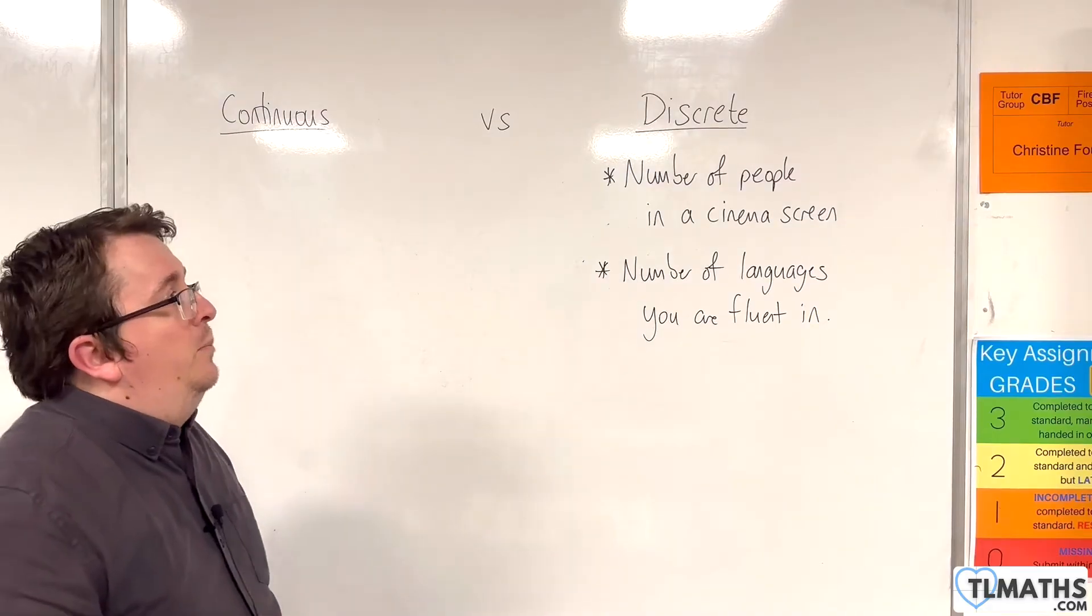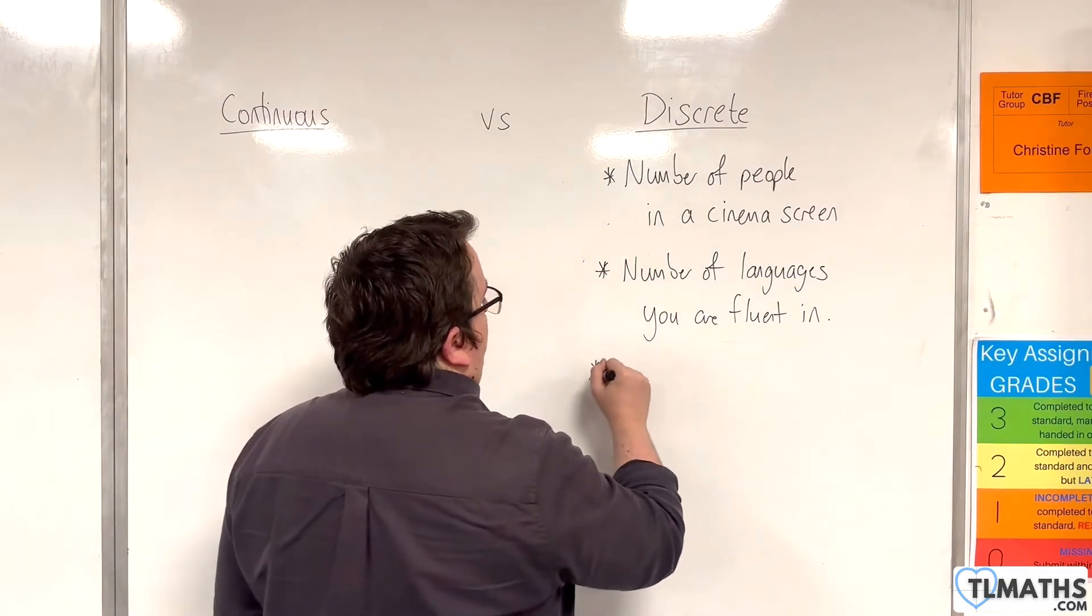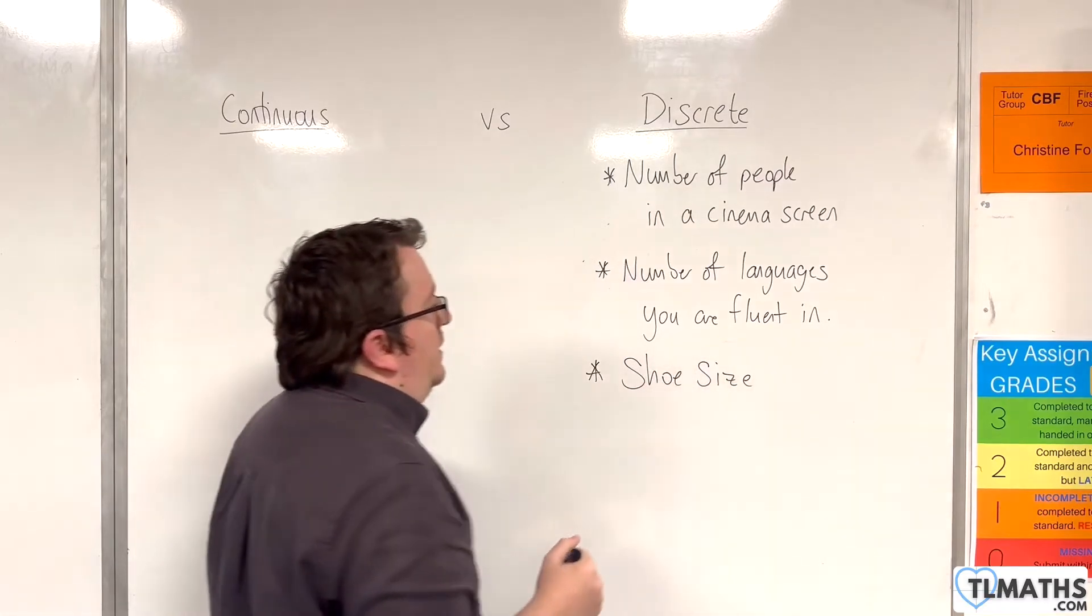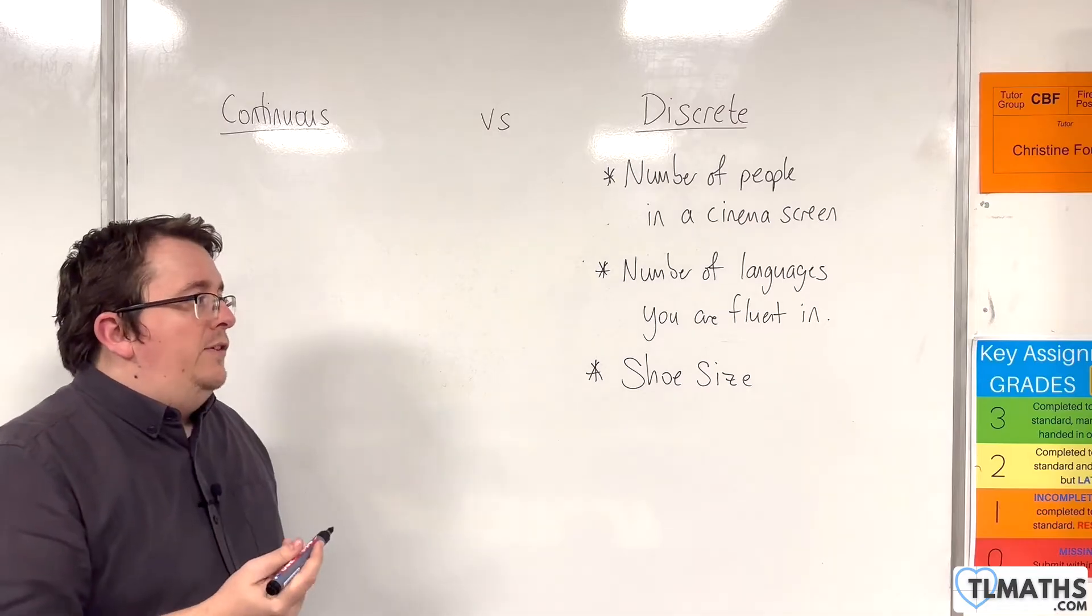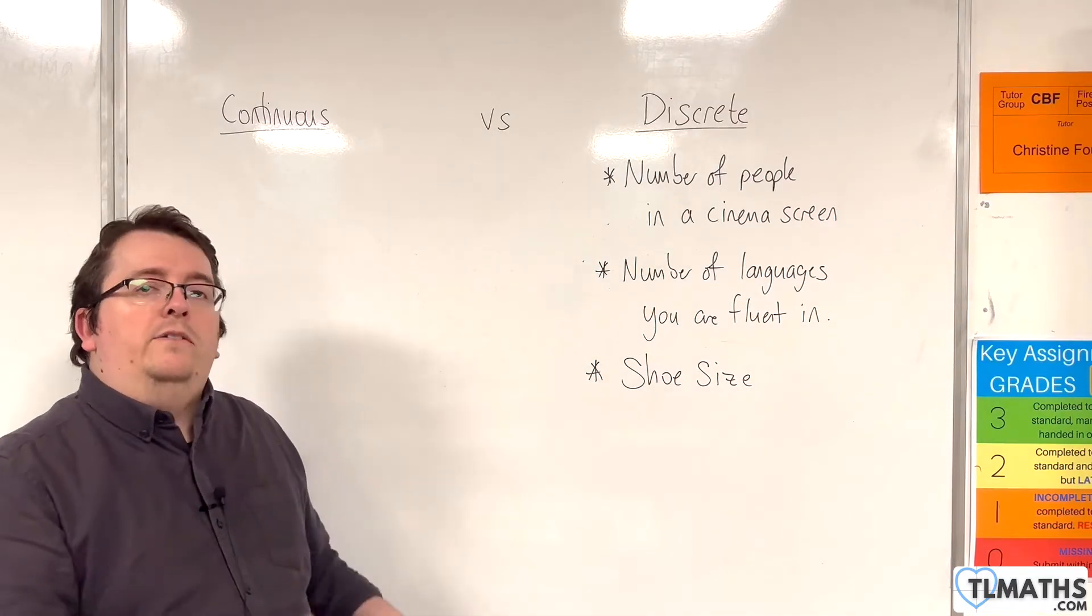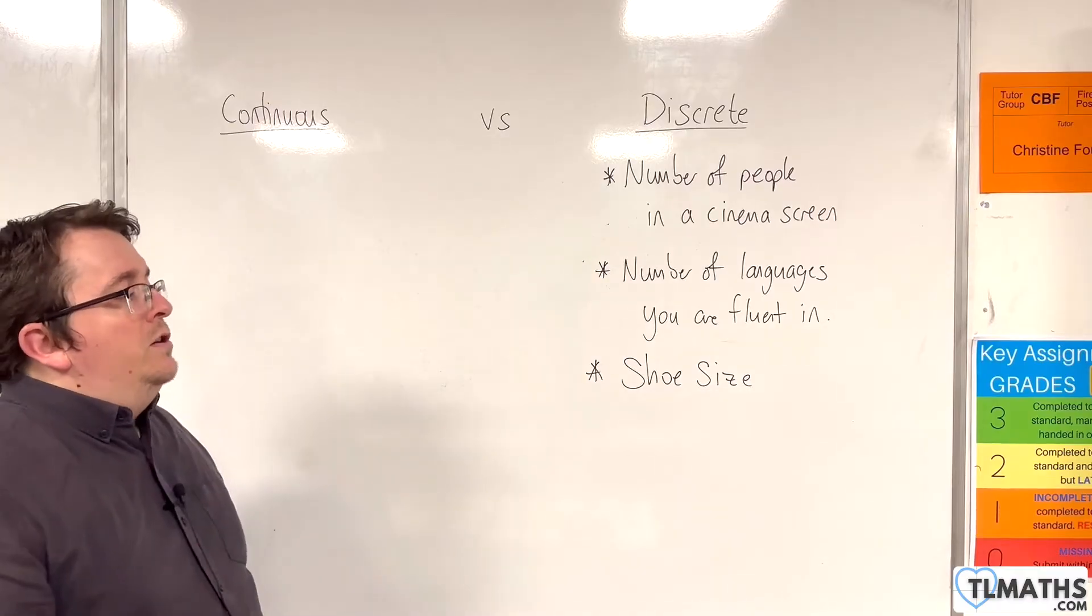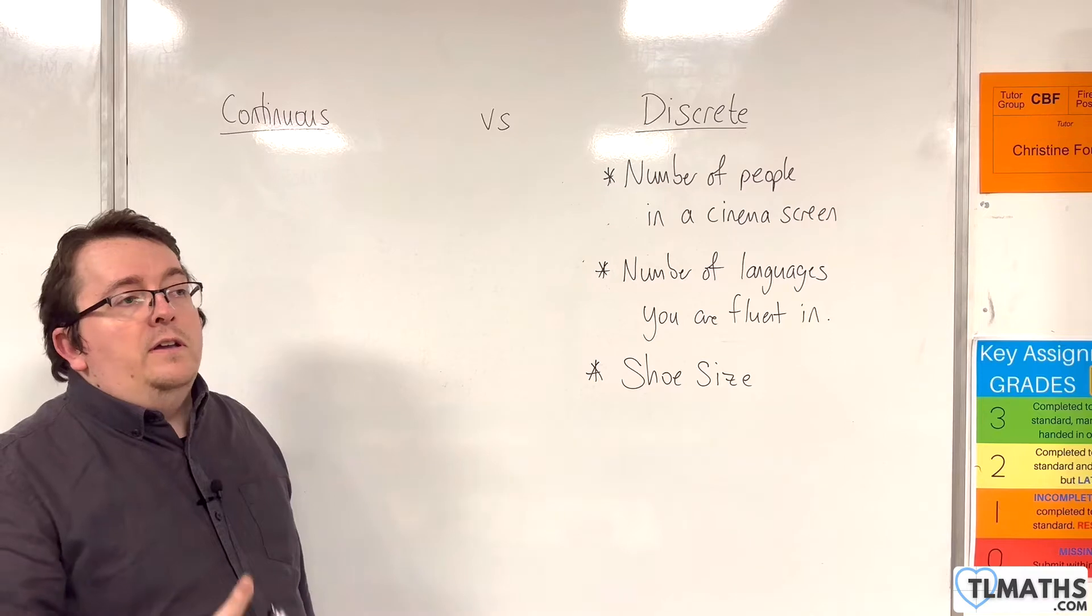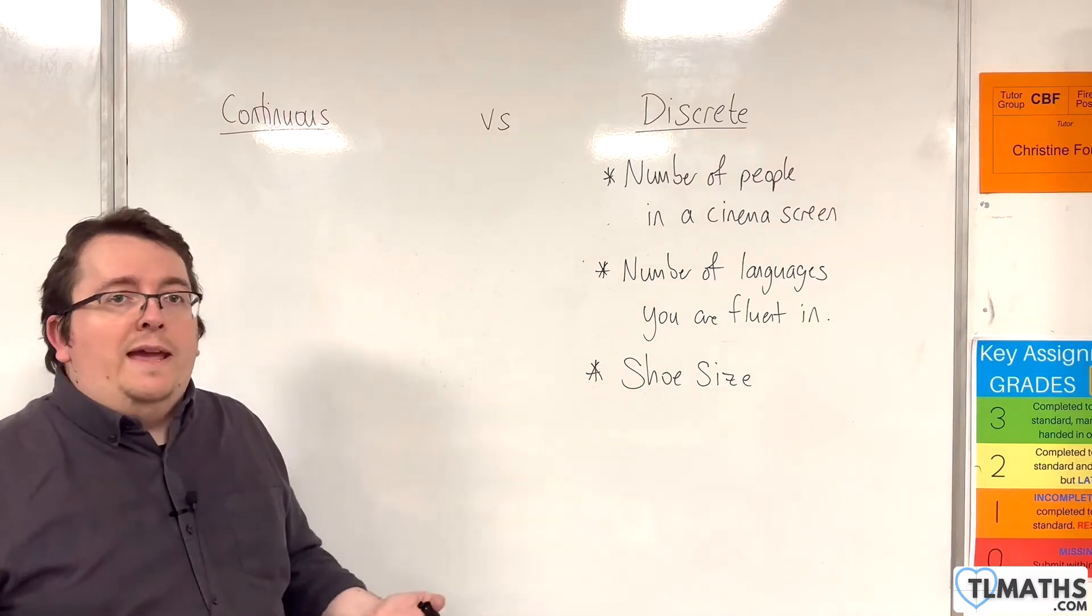Another good example of discrete data would be shoe size. Now shoe size in England would be something like a 7 or 7.5 or an 8 or an 8.5 or a 9 or a 9.5. You can't go into a shop and request a shoe size of 10.3826.